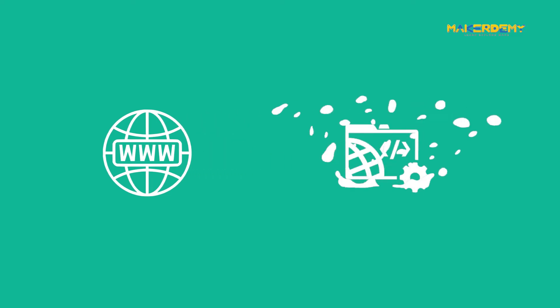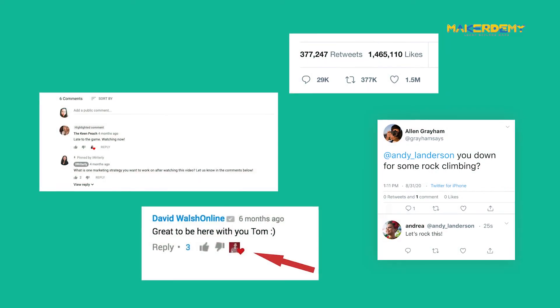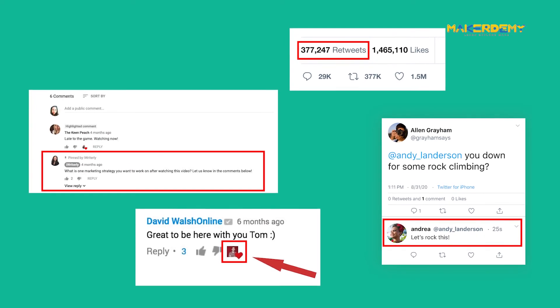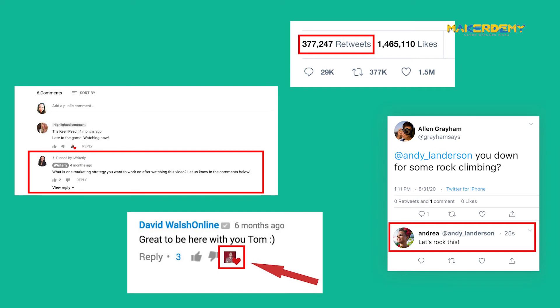With public usage of the web on the rise, new web applications and sites began to cater to the more social aspects of the internet. While Web 1.0 was characterized by static, non-interactive sites and the divide between creators and consumers, Web 2.0 allowed for social interactions among users. These interactions between users, in general, by extension, allowed for interaction between creators and consumers.